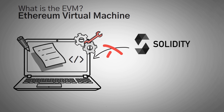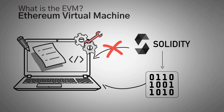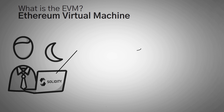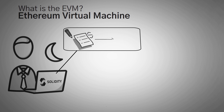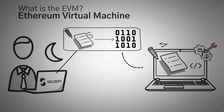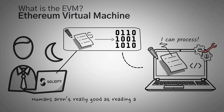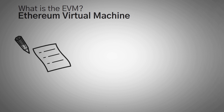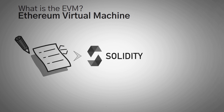Solidity is not the code that the EVM reads and processes. The EVM reads something called bytecode, which is basically just a bunch of ones and zeros. When a developer writes a smart contract, they must compile it — a term meaning they turn the Solidity language code, which is human readable and understandable, into bytecode so that the EVM can understand and read it. Humans aren't really good at reading ones and zeros, so we came up with Solidity to read and write code much more effectively. Essentially, this compiling process is just a way to translate human code to machine code.